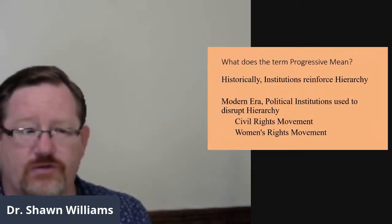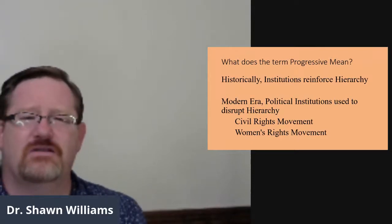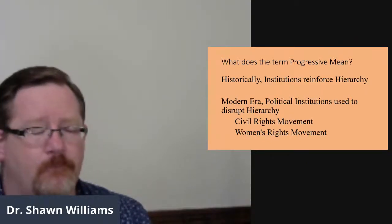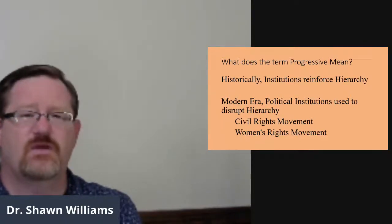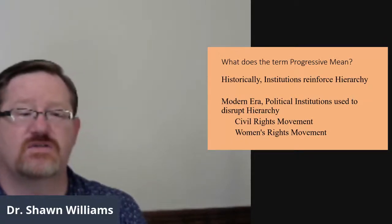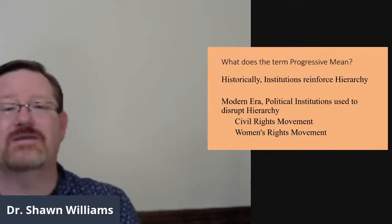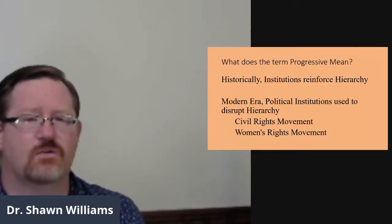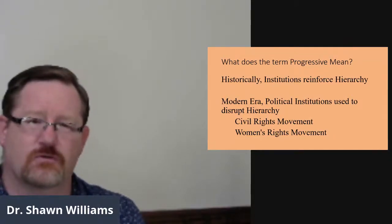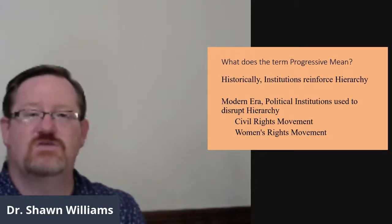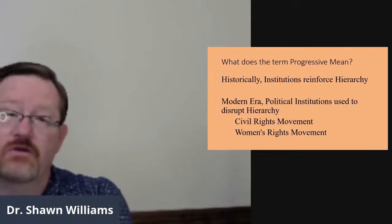One additional term I want to talk about is progressivism. What exactly does progressivism mean, and how do progressives fit into this traditional conservative versus liberal paradigm? Historically, when we think about political institutions and government, the role of government was to reinforce social hierarchy. Its job was to maintain existing social norms and values. In a sense, we would say that conservative political authority and rightist hierarchy were in congruence with one another. But in the modern era, especially in the United States where we have a federal political system, that hasn't always been true. In fact, what we've found is that frequently political institutions, especially on the national level, have been used by individuals who want to break down hierarchy rather than reinforcing hierarchy.